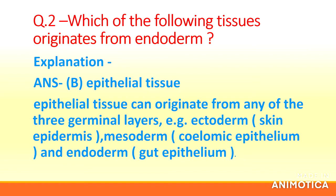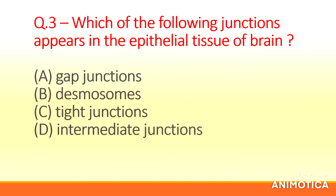Explanation: Epithelial tissue can originate from any of the three germinal layers — ectoderm (e.g., skin epidermis), mesoderm (e.g., coelomic epithelium), and endoderm (e.g., gut epithelium). Question 3: Which of the following junctions appears in the epithelial tissue of the brain? (a) Gap junctions, (b) Desmosomes, (c) Tight junctions, (d) Intermediate junctions.